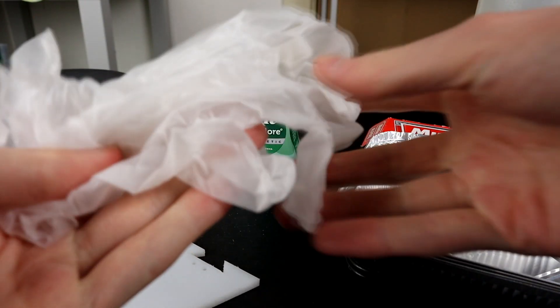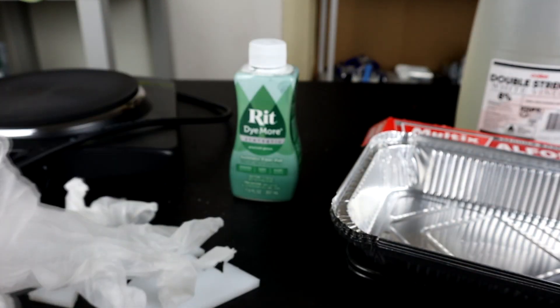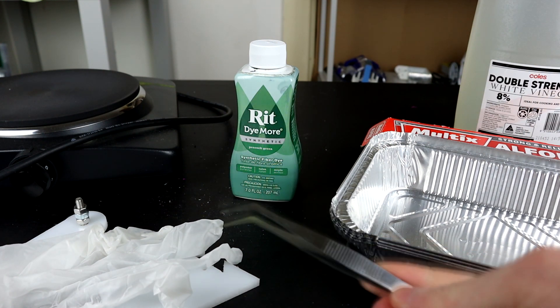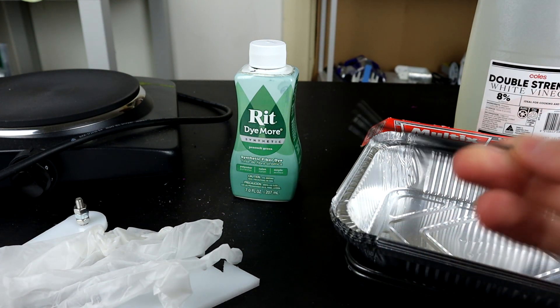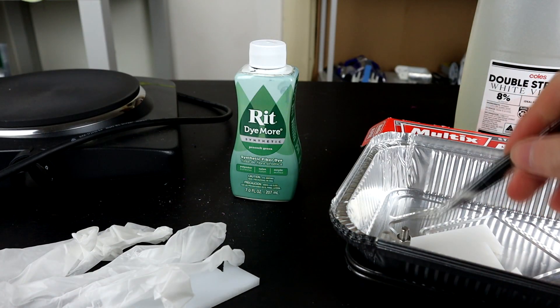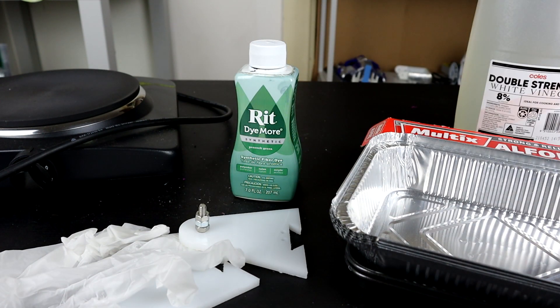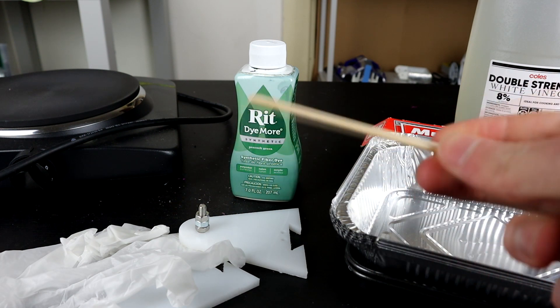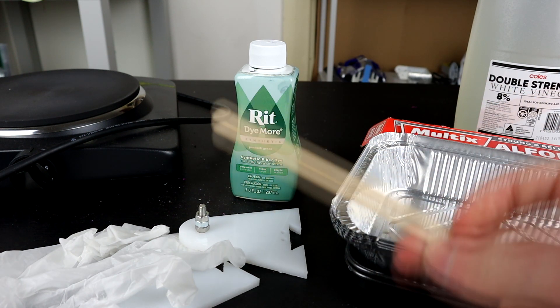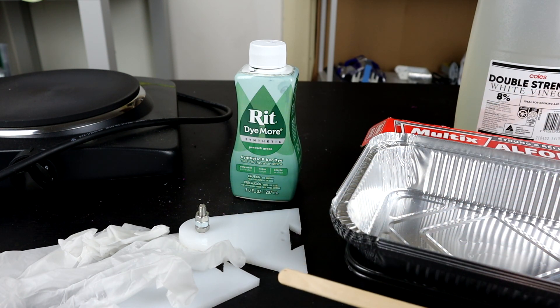Some important things: gloves to keep the dye off your hands, some tweezers or pliers or anything else like that to allow you to grab the parts back out of the dye bath without putting your hands in, and of course a pop stick or something along these lines to stir your dye mixture to get it to a good consistency.